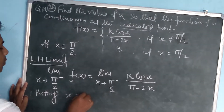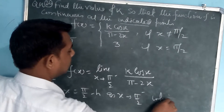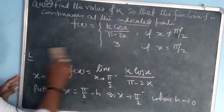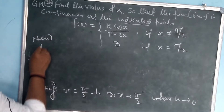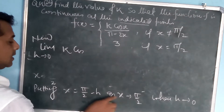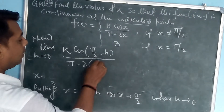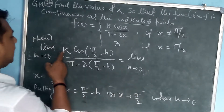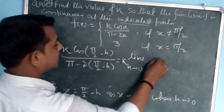We substitute x = π/2 - h, as x tends to π/2 from the left when h tends to 0. So limit becomes h tends to 0. We put k·cos(π/2 - h) / (π - 2(π/2 - h)). We can take k outside as a constant. And we know that cos(90° - θ) = sin(θ).